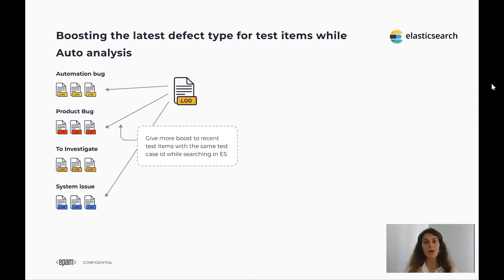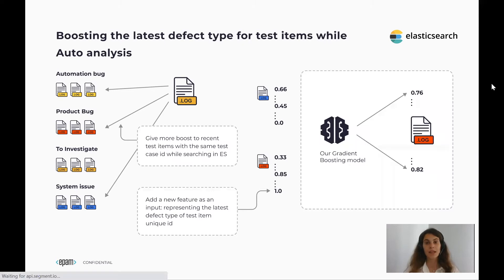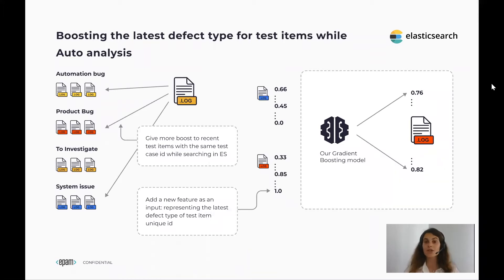We will filter out all the results for the same log. We also add a new feature as input, which represents the latest defect type of a test item unique ID. The rest of the pipeline stays the same, and the model gives us the probability for a test item to be of a specific issue type. According to our experiments, this feature helps the model give higher probability to the latest results.